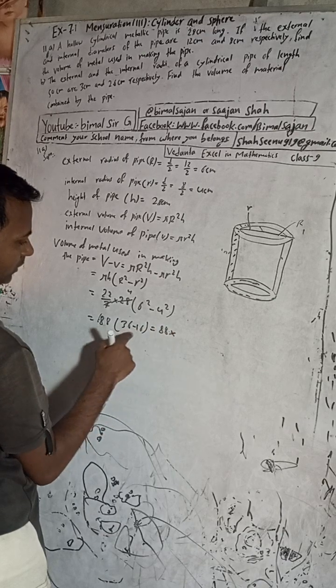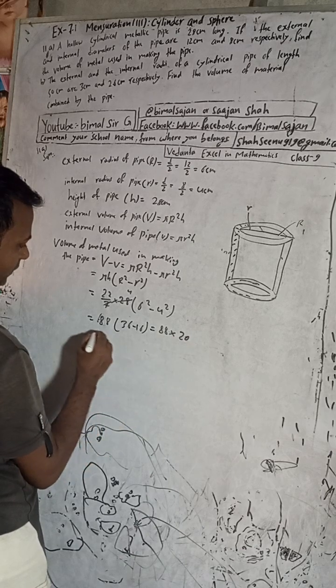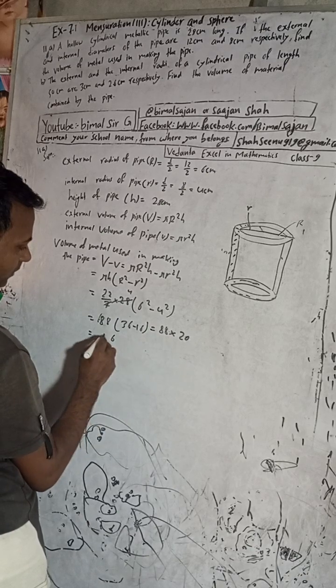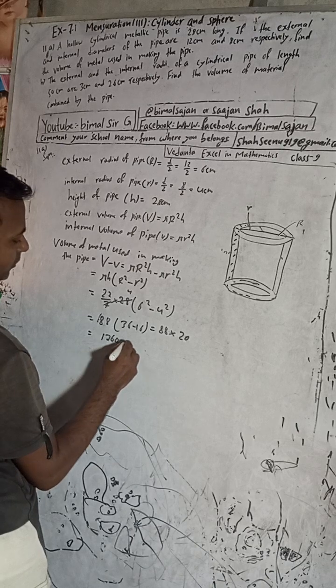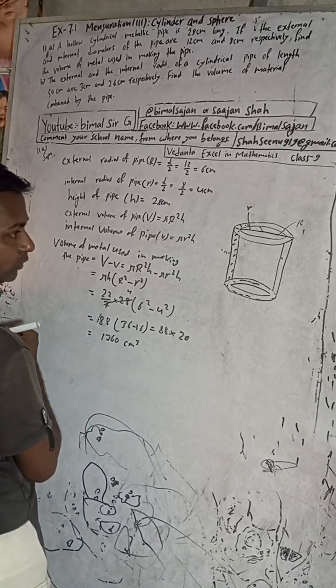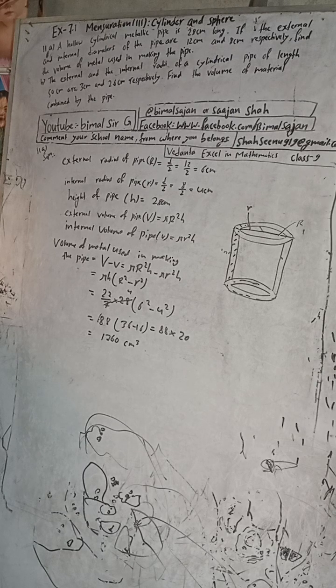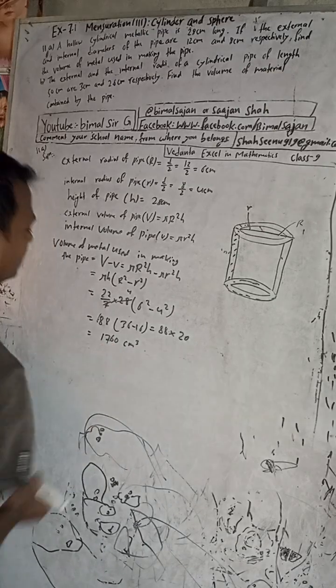88 into 20 equals 1760. So the volume of metal used is 1760 cm³. Checking the book answer for 11A — it is 1760. Correct answer: 1760. This is the required solution. Hope you understood. See you in the next video. Radhe Radhe, Jai Shri Krishna.